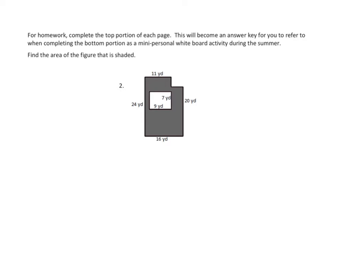Let's look at this figure and figure out the measurements. If we think about just the big rectangle — as if this corner weren't taken out — we know its width is 16 yards and its height is 24 yards. So the largest part is 24 by 16. Then I have to deal with the two smaller pieces. This one is simpler because they've labeled the length and width of this rectangle, so we can take that one out right away: that's 9 times 7.